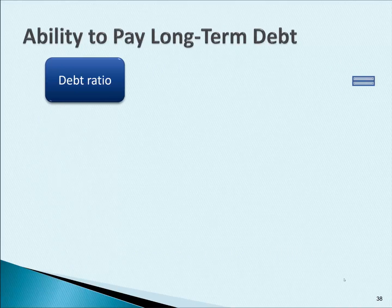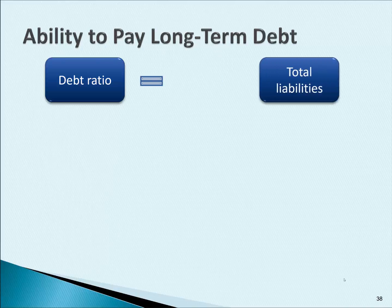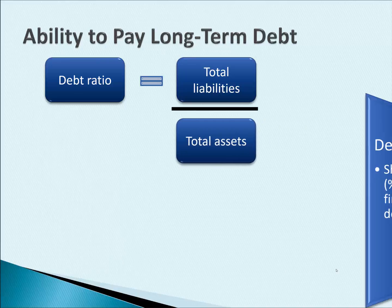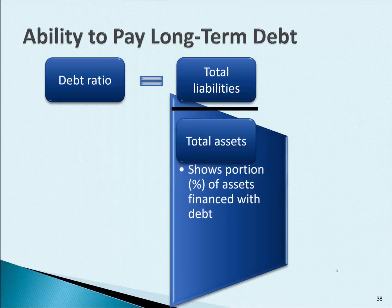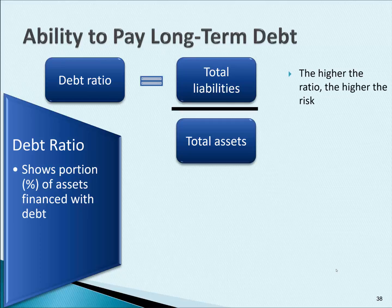The first one is the debt ratio. The formula for the debt ratio is total liabilities divided by total assets. It shows you the percentage of assets that are financed with debt. A lower number is better, and a higher number is going to represent higher risk.